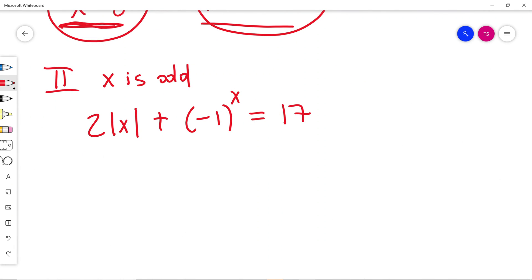x is odd, so my equation becomes 2 times absolute value of x. When x is odd, I can think 3. Minus 1 to the power of 3, for example, this is just negative 1.